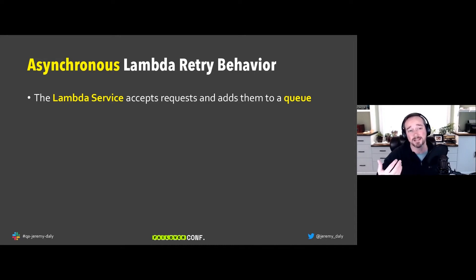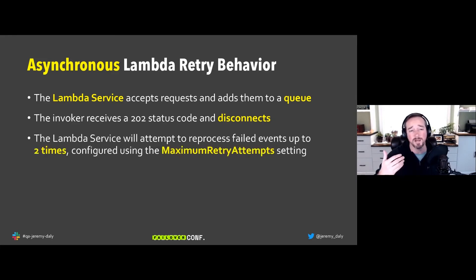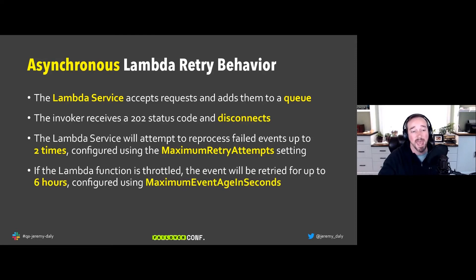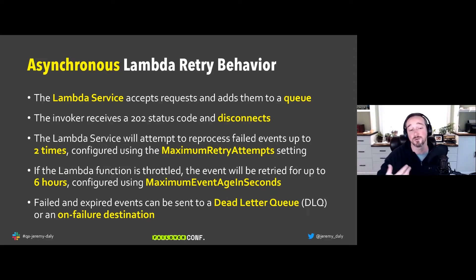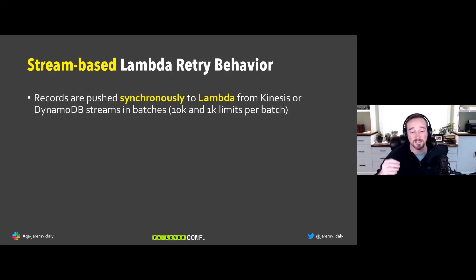For asynchronous Lambda invocations, the Lambda service accepts the request and captures the event in an AWS-managed queue. The invoking service gets a 202 status code and disconnects. The Lambda service will then try to call your Lambda function up to two times, configurable with max retry attempts. If throttled, the message is stored for up to six hours (configurable via maximum event age). Failed or expired events go to a DLQ or on-failure destination.